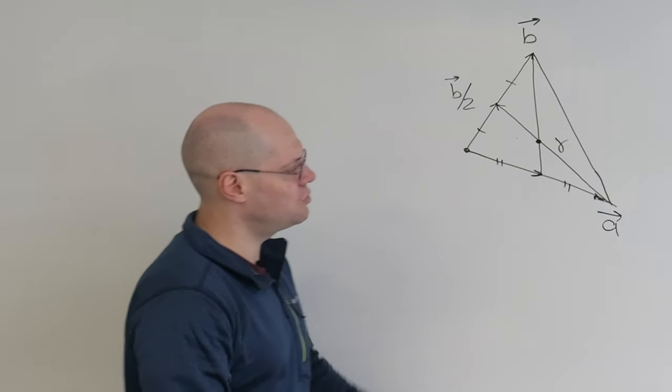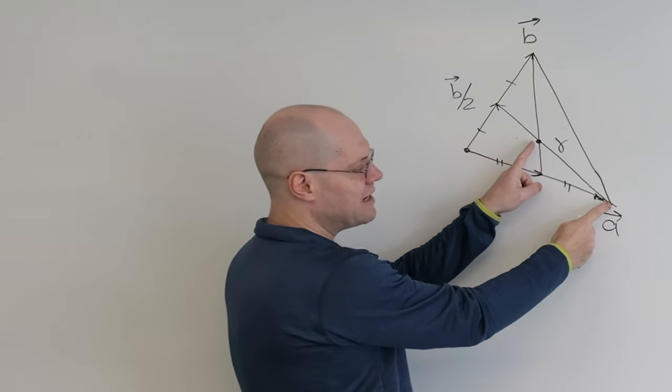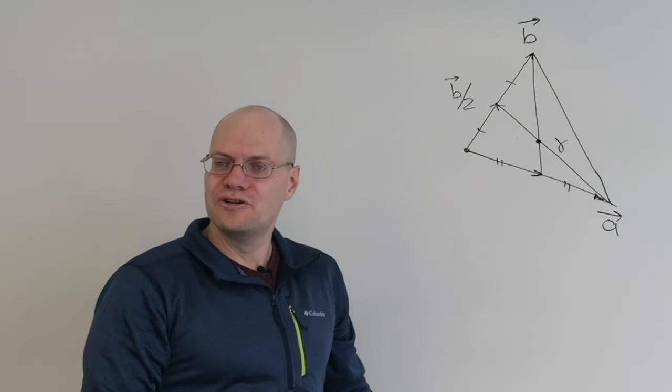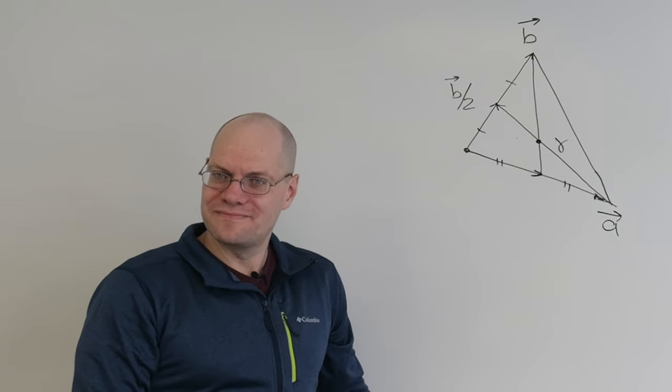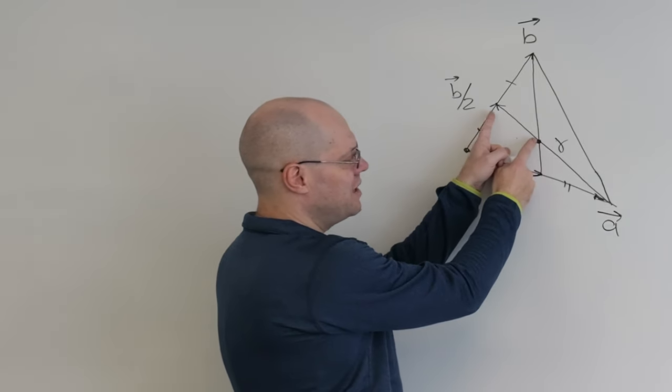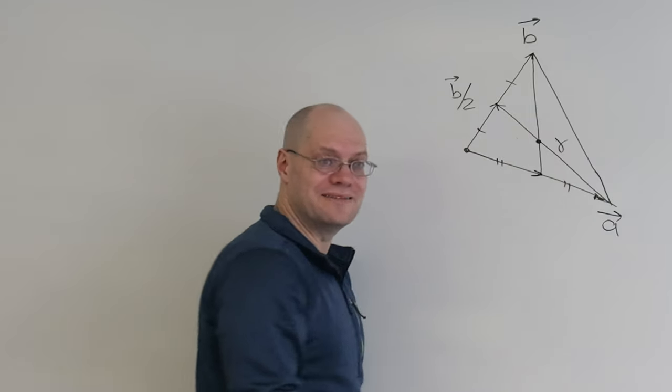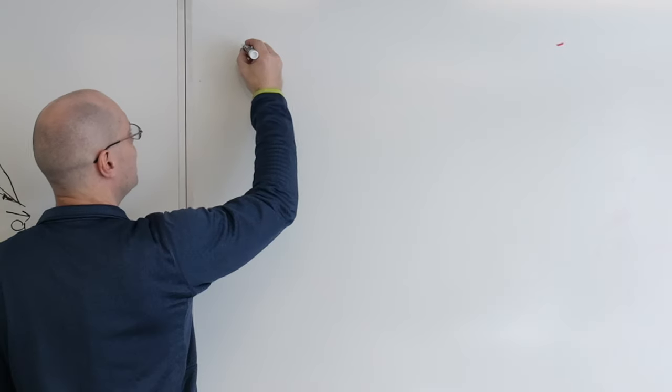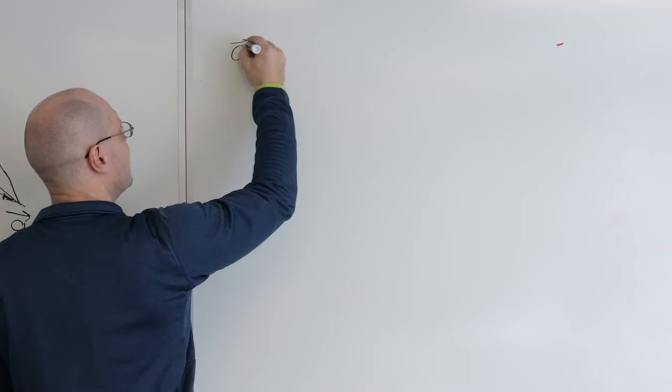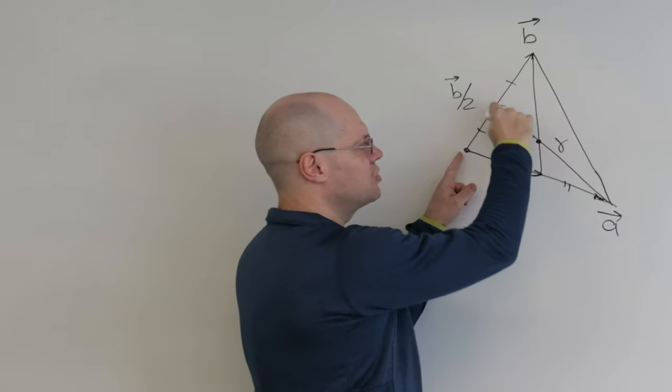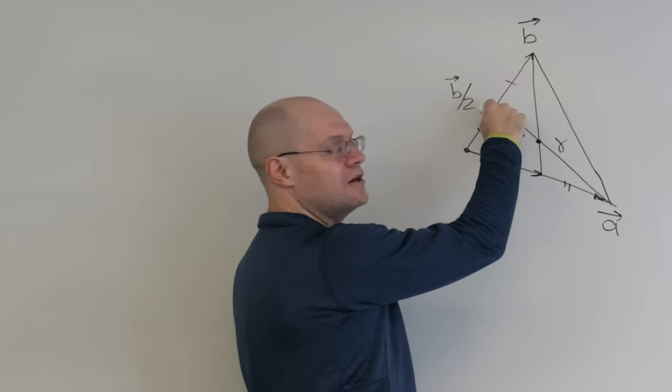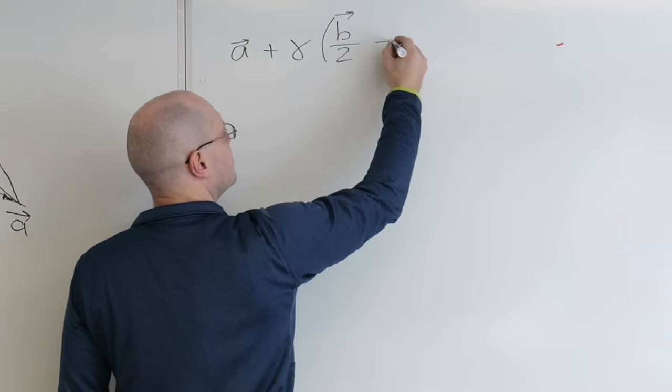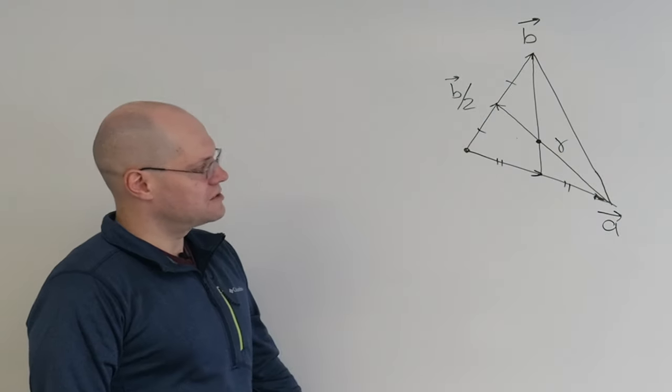We're hoping to prove that gamma is two-thirds, right? That would mean that this is one-third, so it's two in proportion two to one. Okay, so that's one way to get there. So I'll write it down. It's, what did we say? You go to A and then a certain proportion, gamma, along the vector B over 2 minus A. That's correct.